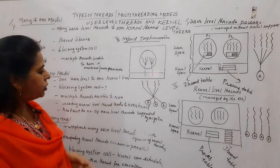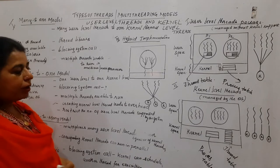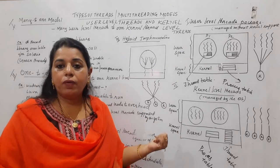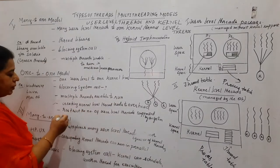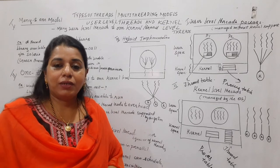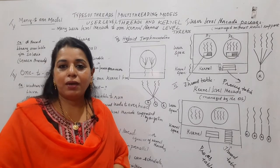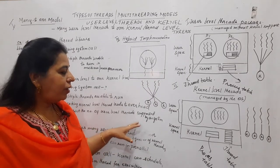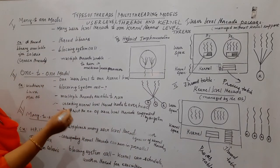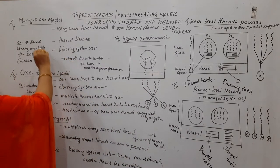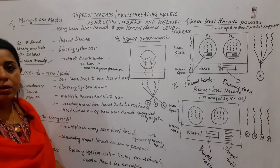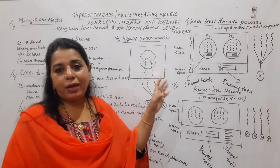A disadvantage of the one-to-one model is that creating a kernel-level thread leads to overhead. Any time a user-level thread is created, a corresponding kernel-level thread must also be created, and that overhead is significant. This also restricts the number of user-level threads the system supports — the system limits thread creation to the number of available processors. An example of the many-to-one model is Green Threads, which is a thread library available for Solaris.